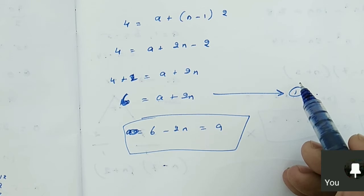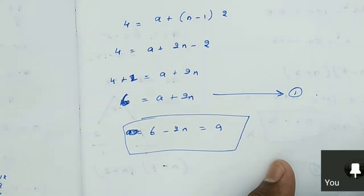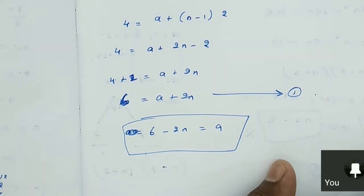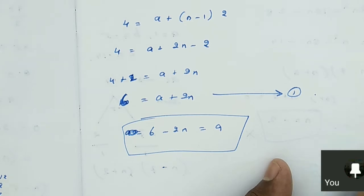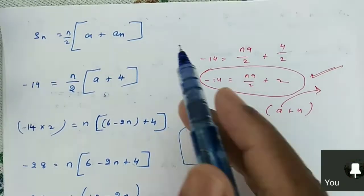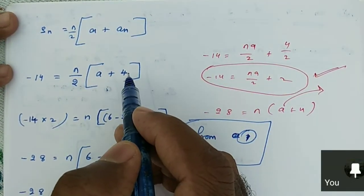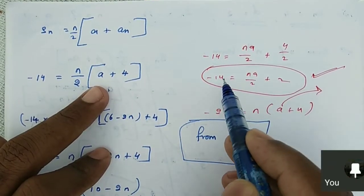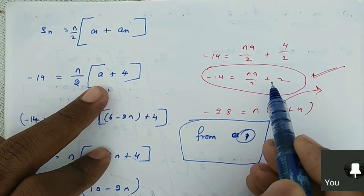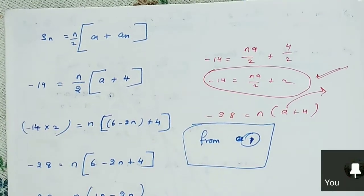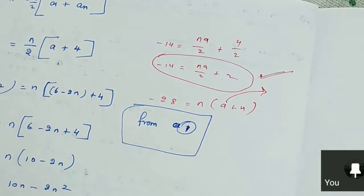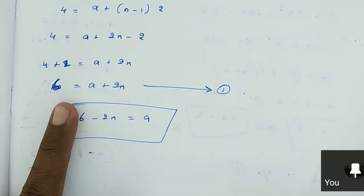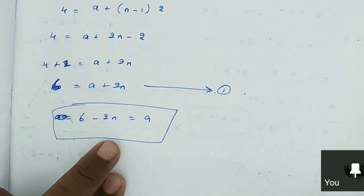Now we can try with S_N for the same pair of equations. When we get S_N also in the same pair, we will use the elimination method. S_N formula: S_N is equal to N by 2 times A plus A_N. A_N value is 4. So minus 14 is equal to N by 2 times A plus 4. Solving: I get NA by 2 plus 2N. But it is not a linear pair of equations, so we can't use elimination. The only hope is from equation 1: A is equal to 6 minus 2N.